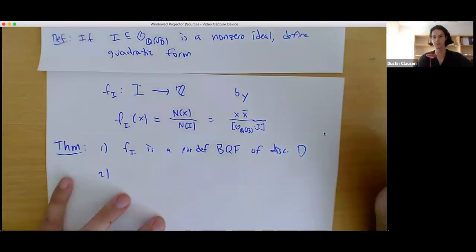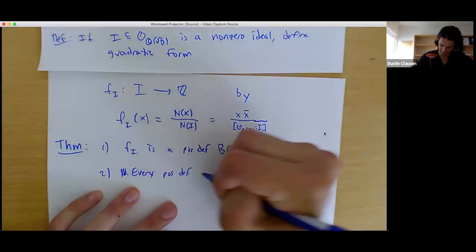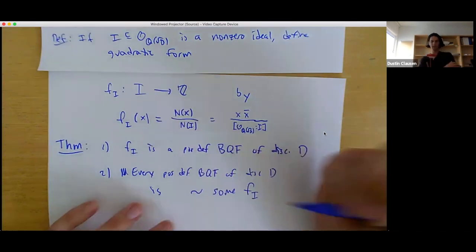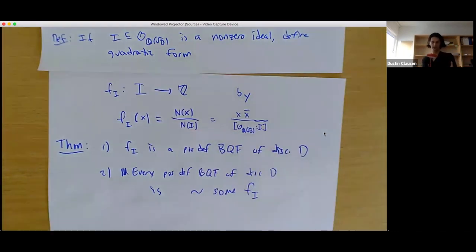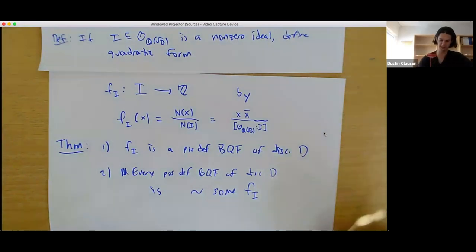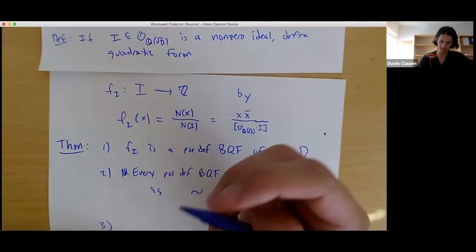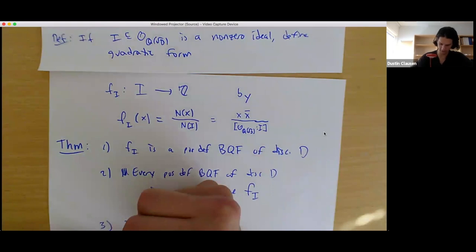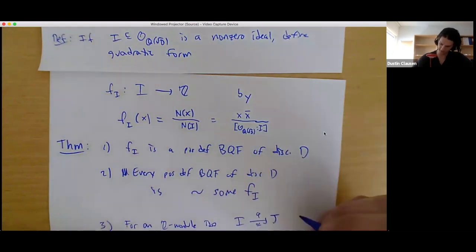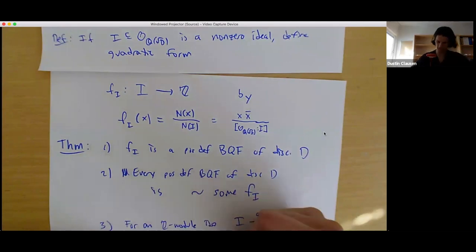The second claim is that up to strict equivalence, every positive definite binary quadratic form of discriminant D is strictly equivalent to some f_I. So if you're interested in binary quadratic forms up to strict equivalence, you might as well assume your binary quadratic form is one of these associated to some ideal. The last thing to understand is what are the strict equivalences between these binary quadratic forms.